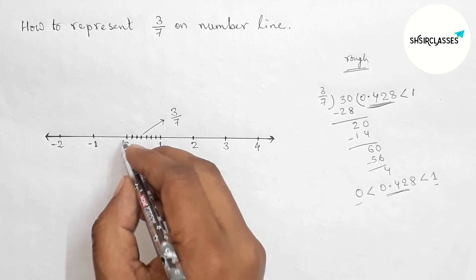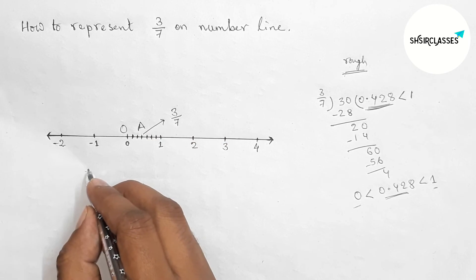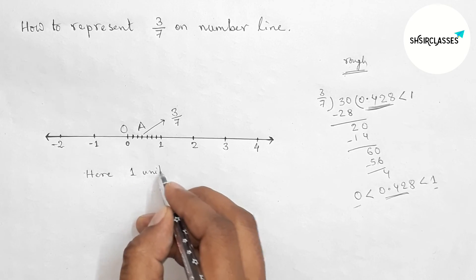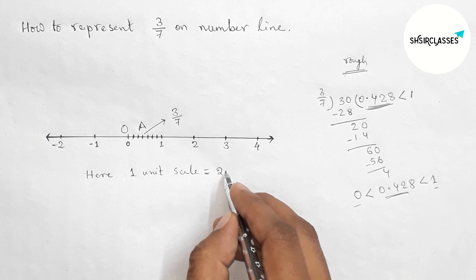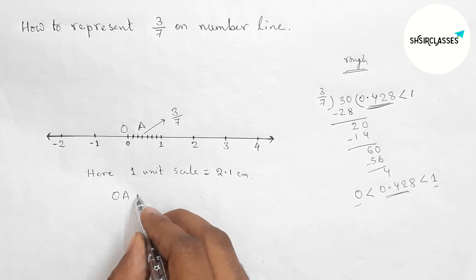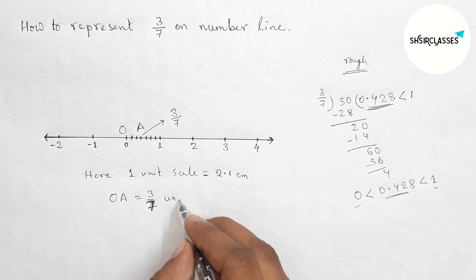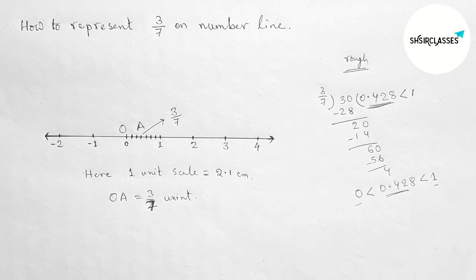Now denoting point O and A. One unit length is 2.1 centimeters, and OA is 3/7 unit. That's all. Thanks for watching. Please share it with your friends.